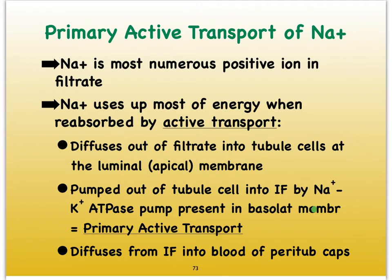We really can't have a secondary active transport mechanism unless we also have a primary active transport mechanism. This all relates to sodium. Sodium is our most abundant positive ion in the filtrate. Because sodium can be pumped out of our tubule cell into the interstitial fluid and then diffuse into the blood, we create an electrochemical gradient where sodium can actually diffuse from the filtrate into our tubule cell. Let's take a closer look at this with a sketch.